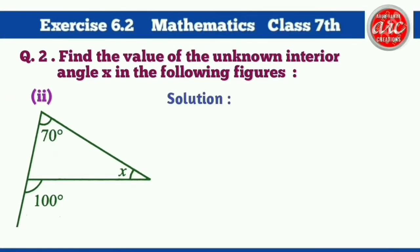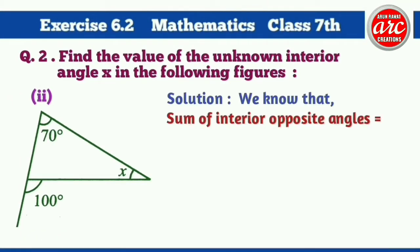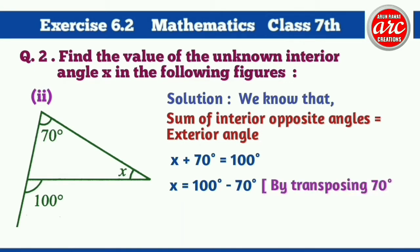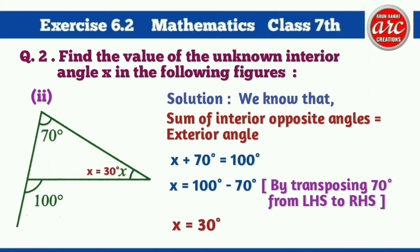Part 2 solution: We know that the sum of interior opposite angles is equal to the exterior angle. X plus 70 degrees is equal to 100 degrees, or X is equal to 100 degrees minus 70 degrees by transposing 70 degrees from the left-hand side to the right-hand side. So X is equal to 30 degrees.